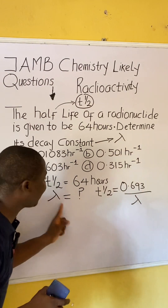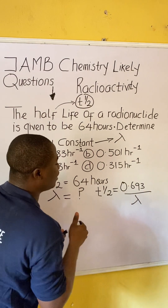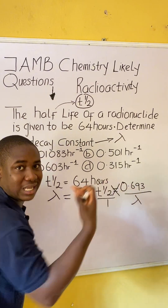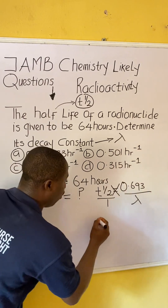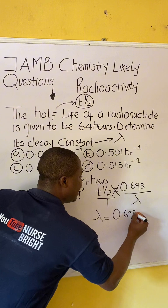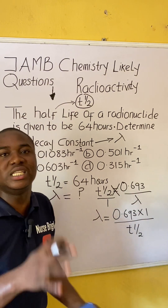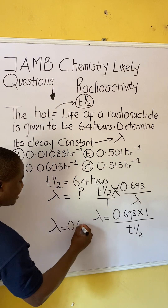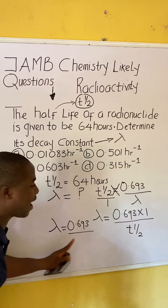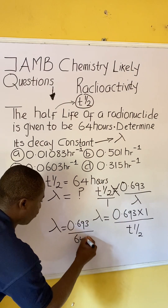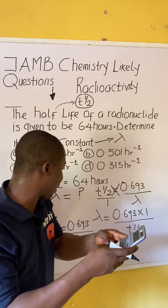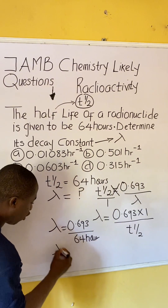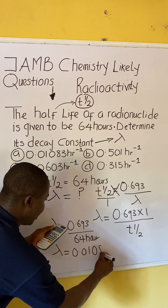From this question we are asked to get the decay constant, so we make λ the subject of the formula. Rearranging gives us: λ = 0.693 divided by T½. Substituting the values from the question, λ = 0.693 ÷ 64 hours. Calculating that on the calculator gives us 0.01083. So the decay constant is 0.01083.